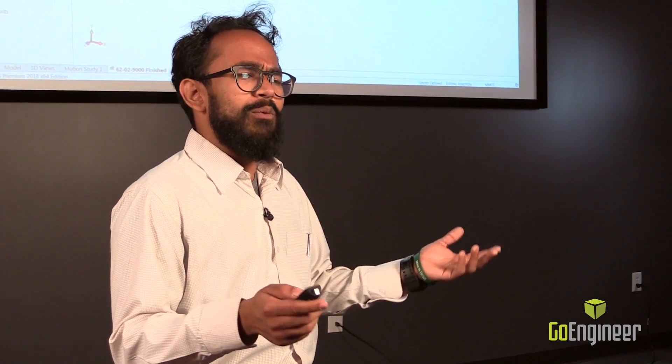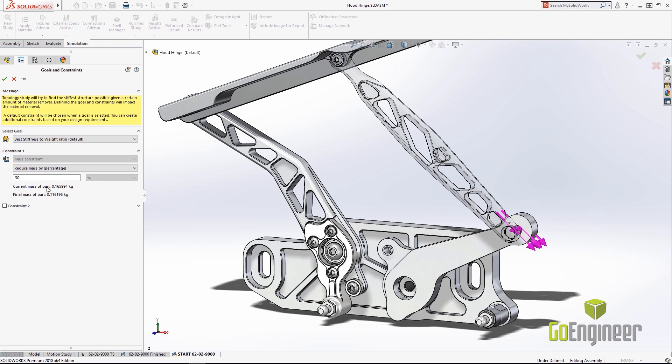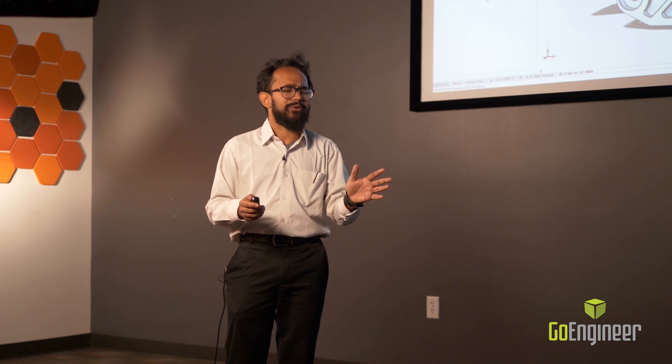Setting up a topology study is really straightforward. It's much like setting up any static structural analysis. You need to specify what the component is made of, what the constraints are, what kind of loading conditions it's experiencing. The only two new features that you need to add are what is your optimization goal and what kind of manufacturing constraints would you like to impose on your component.